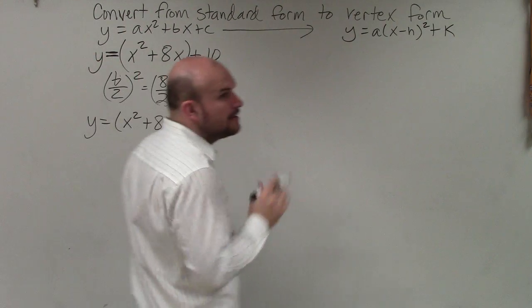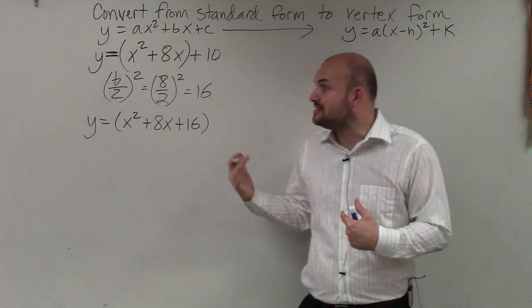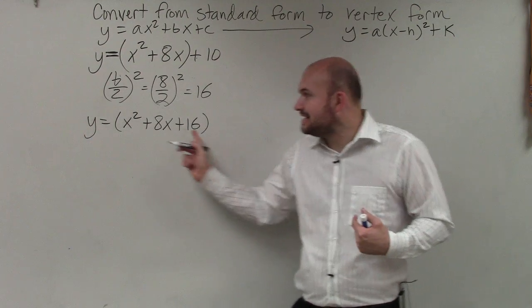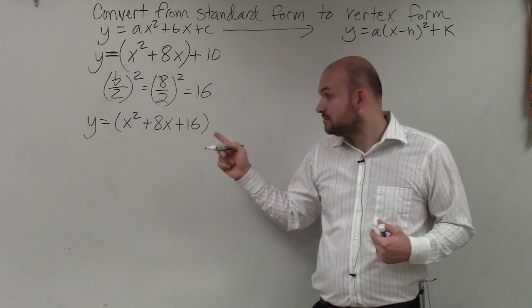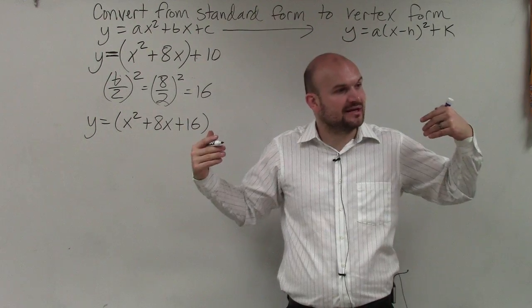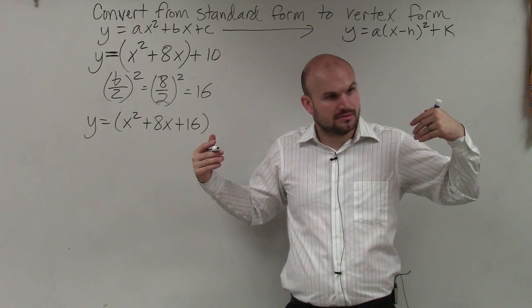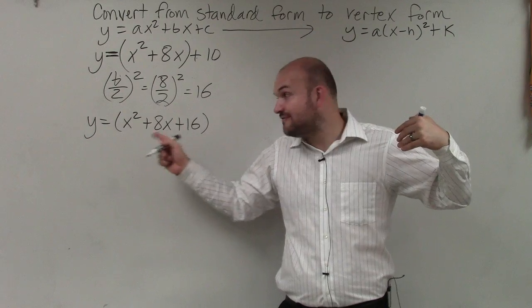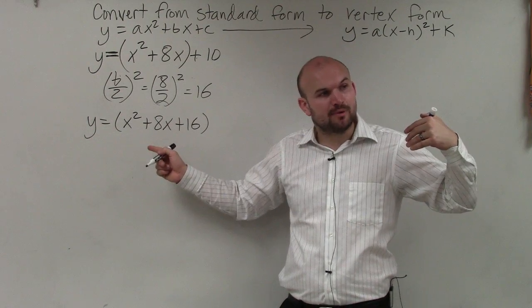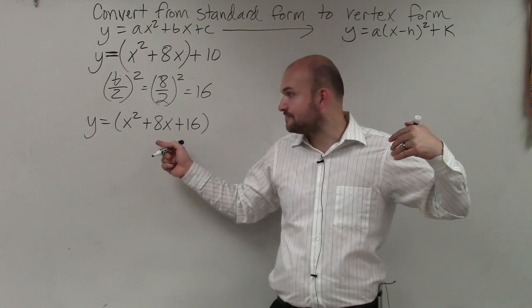By adding this 16 inside the parentheses, you guys can see this is a perfect square trinomial. Can I factor it like I did at the beginning of class? This can quickly be factored using the perfect square trinomial factoring technique.